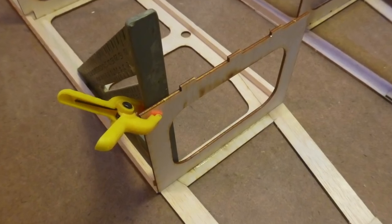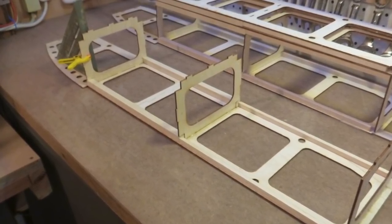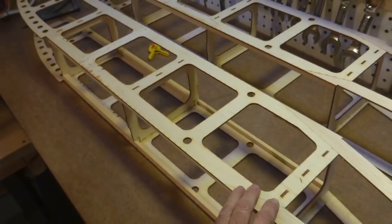Now we can go ahead and tack glue in the bulkheads, using a square to ensure a 90 degree angle. Then glue the other fuselage half to that.